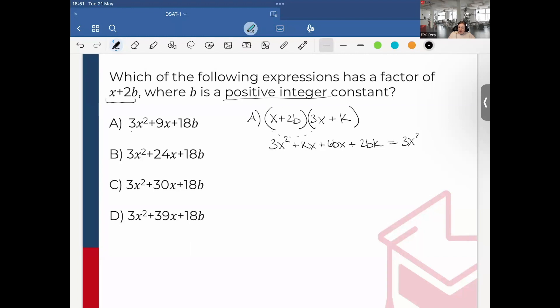This equals my expression in answer choice A: 3x² + 9x + 18b. We can see 3x² equals 3x². Here I'm going to factor out the x as (k + 6b)x. And I can see that 2bk equals 18b. So 2bk = 18b. Divide each side by 2b, and I get k = 9.